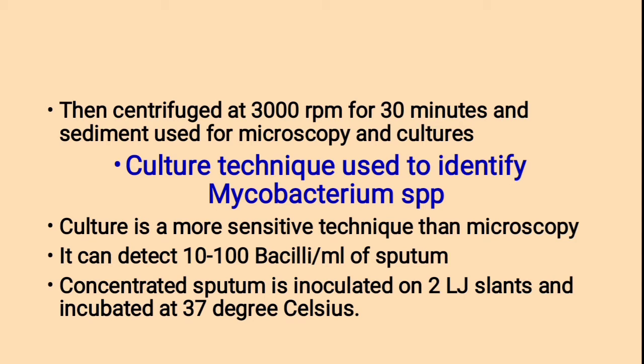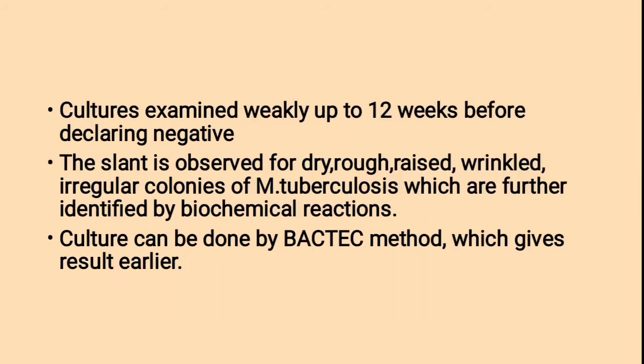Cultural technique used to identify Mycobacterium species — culture is a more sensitive technique than microscopy. It can detect 10 to 100 bacilli per ml of sputum. Concentrated sputum is inoculated on two Löwenstein-Jensen slants and incubated at 37°C. Cultures are examined weekly and after 12 weeks before declaring negative. The slant is observed for dry, rough, wrinkled, irregular colonies of Mycobacterium tuberculosis, further identified by biochemical reactions. Culture can also be done by BACTEC method, which gives earlier and more rapid results.